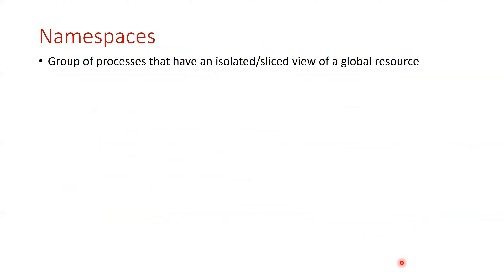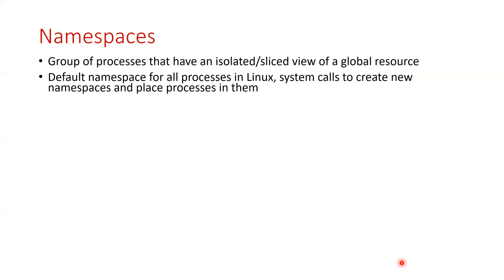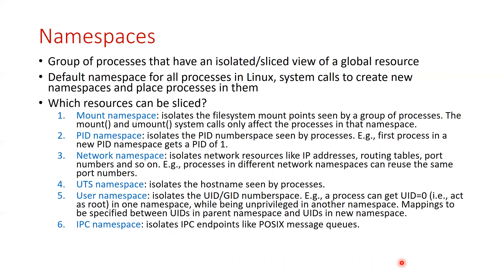A namespace is a group of processes that have a certain isolated or sliced view of a global resource. If you don't create a namespace, there is a default namespace for all processes in Linux. But it is possible to create a separate isolated namespace and put processes in it to have an isolated view of some resource. These are the six namespaces supported in Linux today. The first is the mount namespace — you use the mount and unmount system calls to mount and unmount a file system.